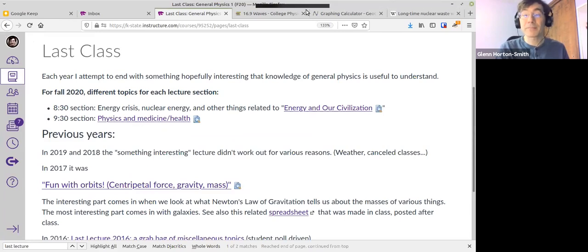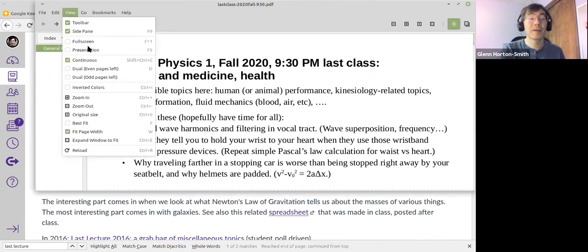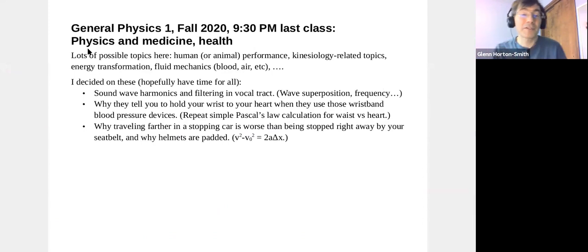Each year I try to end the classes with something that's hopefully kind of useful and interesting, some sort of where knowledge of general physics comes into it, makes it easier to understand. For fall 2020, the suggestions I got were different from 8:30 and 9:30. In 8:30 I talked about energy, nuclear energy, different aspects of potential energy turning into kinetic energy and electric energy. It's going to be physics and medicine or health at 9:30 because that was a request. So I decided on just three things, hopefully there'll be time for all.